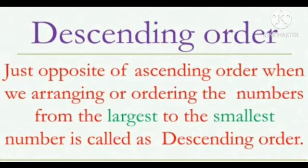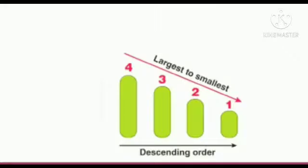Now, descending order. Can you tell me what is descending order? It is just the opposite of ascending order. When we arrange or order the numbers from the largest to the smallest number, it is called descending order. As you can see here in this picture, we have arranged numbers from largest to smallest, from 4 to 1. That means descending order.